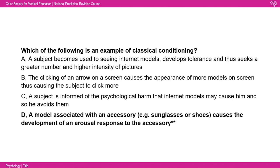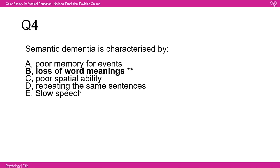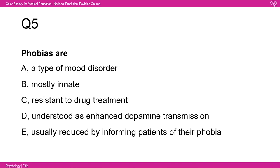Question four: semantic dementia is characterized by: A: poor memory for events; B: loss of word meanings; C: poor spatial ability; D: repeating the same sentences; E: slow speech. If you think about the definition of semantics — the vocabulary and meanings of words — semantic dementia is the loss of word meanings, so the answer is B.